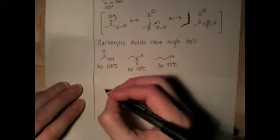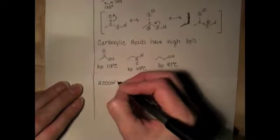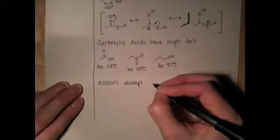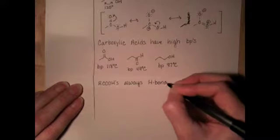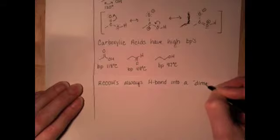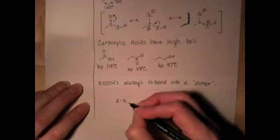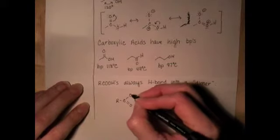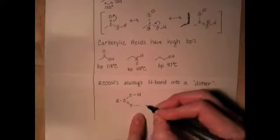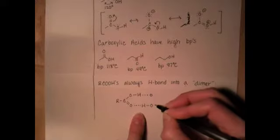So these carboxylic acids always hydrogen bond into a dimer, and it looks like this. Here's one of them, and then you're gonna have some hydrogen bonding over to the next one. So they hydrogen bond like this, side by side.